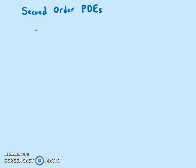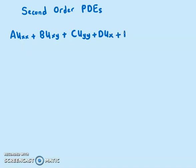Now we are going to look at the second order PDE given by A·u_xx plus B·u_xy plus C·u_yy plus D·u_x plus E·u_y plus F·u equals G. This is our second order PDE.